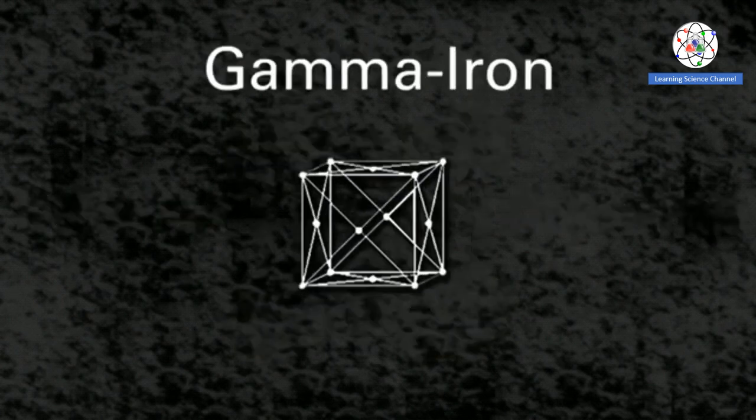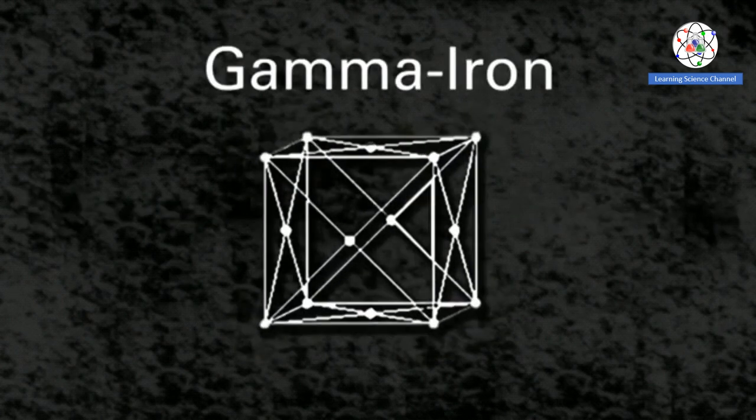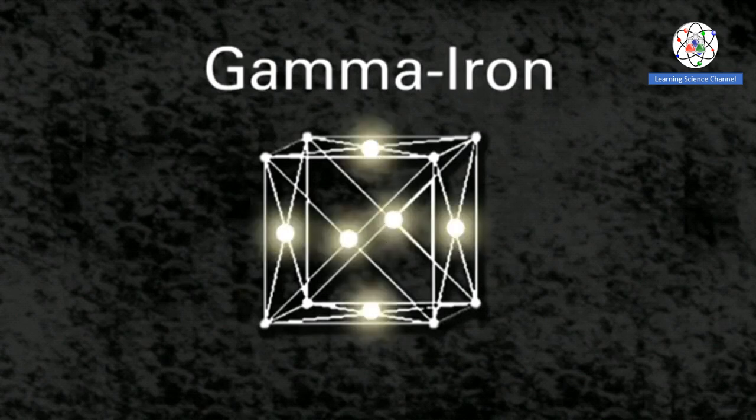Another allotrope of iron has a face-centered cubic structure. In this structure, there is an iron atom at each face of the cube.